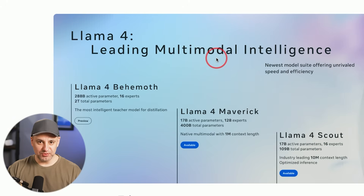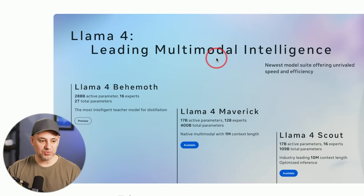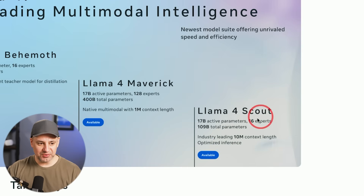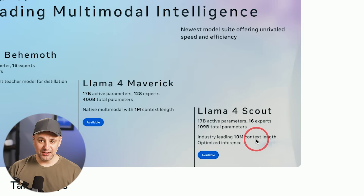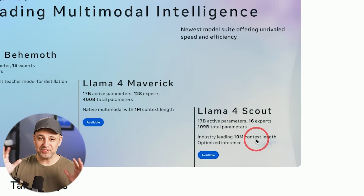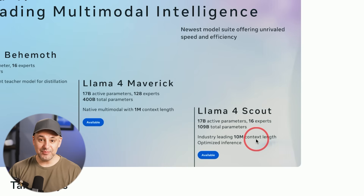All these models are multimodal, which is great, but the biggest thing that stood out to me is the context window — it completely changes how we're going to think and use context windows. Scout has an industry-leading 10 million token context window, which is about 5 million words. Just to put that in perspective, ChatGPT with GPT-4o still has a context window of 128,000 tokens — that's all the context it can remember in a conversation. 128,000 versus 10 million.